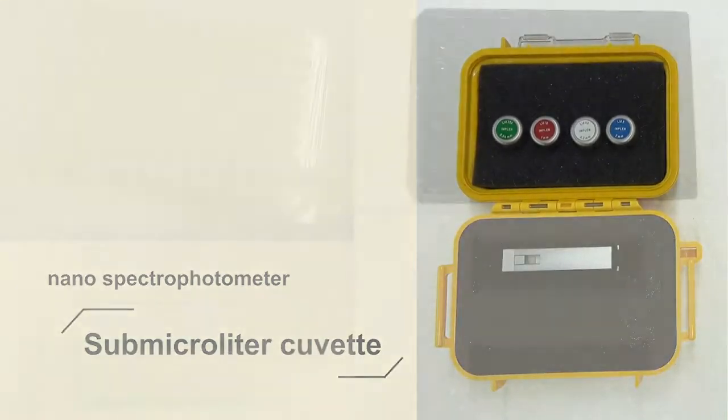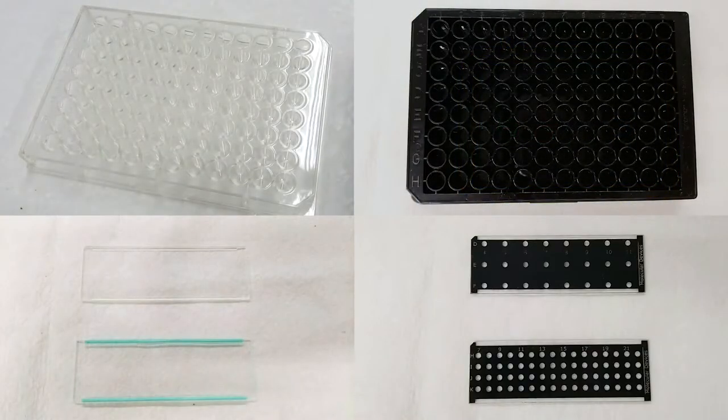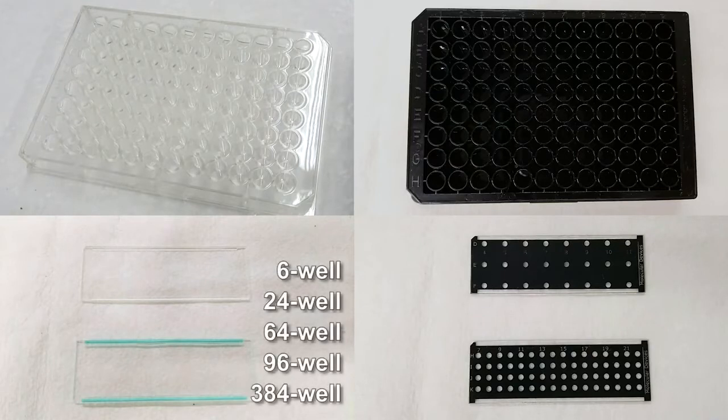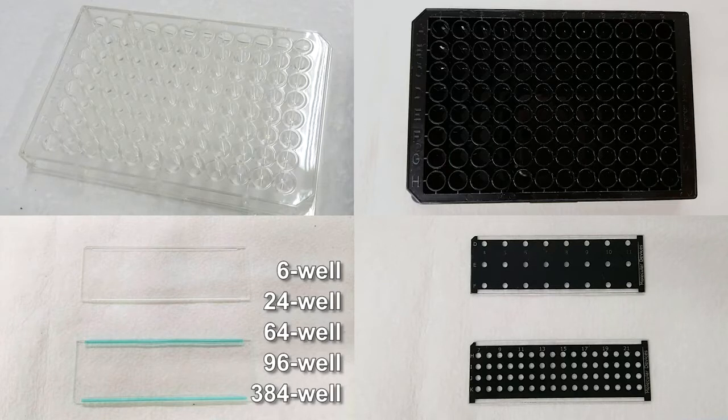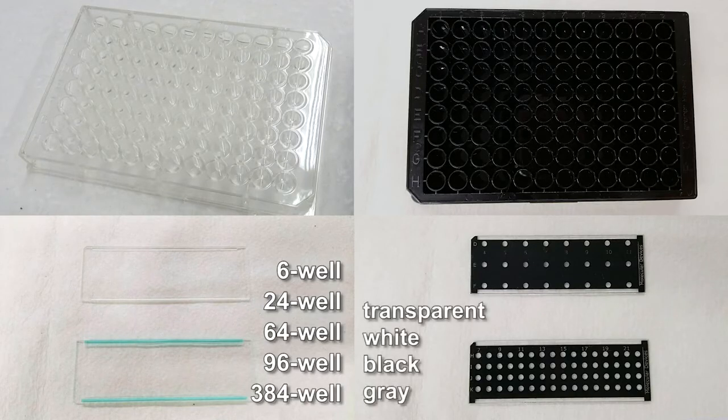The microplates have different formats of 6-well, 24-well, 64-well, 96-well, or 384-well, along with options of transparent, white, black, or gray wall and bottom.